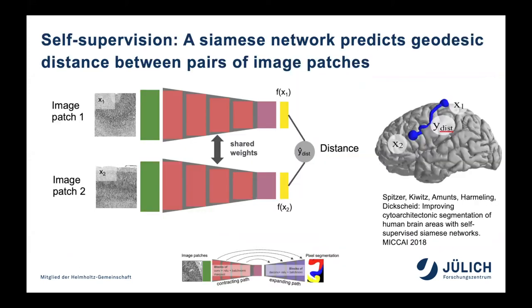We then took a completely different route, stepping back from image segmentation to a self-supervised task. We created a Siamese network — two image patches fed through the same network branches with shared weights — and asked the network to learn to determine the distance across the brain surface between two patches. This could be done with many image patches from the BigBrain thanks to the 3D reconstruction. Remarkably, the network learned quite well to predict these distances. Our hypothesis was that to solve this task, the network must understand something about cytoarchitecture.